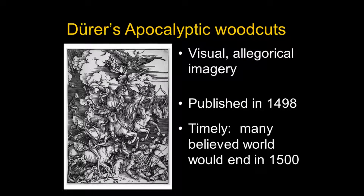The imagery in the Apocalypse is very visual. It has been interpreted allegorically — things you don't see every day, like four horsemen riding out and killing people, or a great dragon whose tail sweeps the stars from the sky. It has been over and over again used in art: in tapestries, manuscripts, paintings, sculpture, right up to the present day.